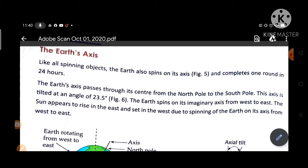The Earth completes one round in 24 hours. Earth apna burn round 24 hours mein complete kerti hai jab hoa apni axis per spin kerti hai. The Earth's axis passes through its center from the North Pole to the South Pole.